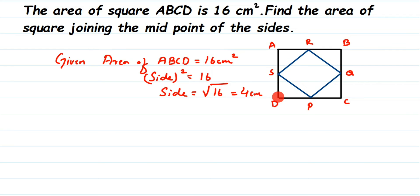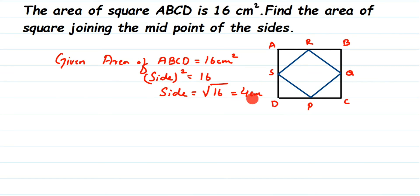Since each side is 4 centimeter and the inner square joins the midpoints of the sides, point S is the midpoint — so AS will be 2 centimeter and SB will be 2 centimeter. Similarly, DP will be 2 and PC will be 2. Midpoints divide each side into two equal parts, so each half is 2 centimeter.